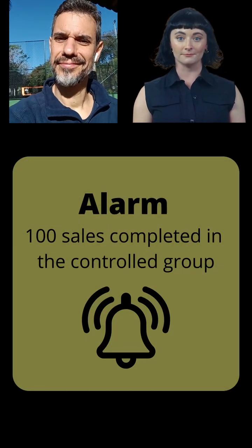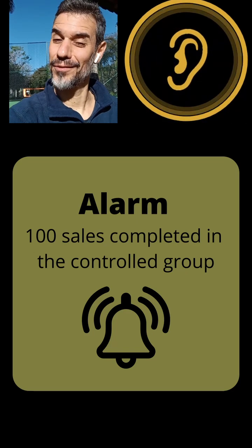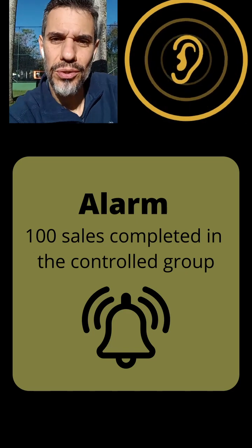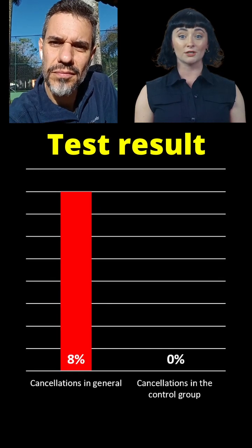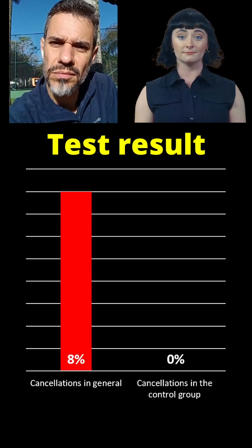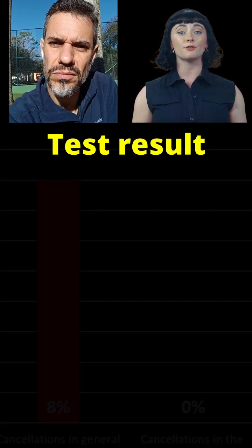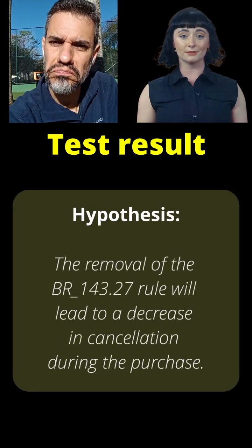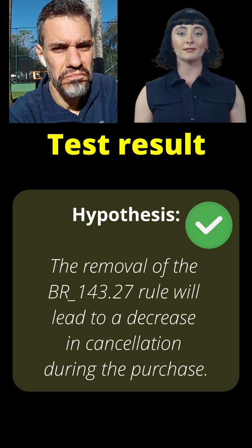Alarm: 100 sales completed in the control group already. Oh, that was fast! What was the result? No sales were cancelled in the control group. This result indicates that the hypothesis is true — cancellations indeed seem to be a result of the address proof requirement.